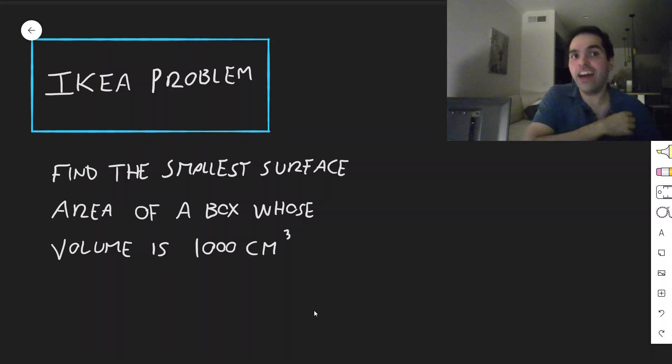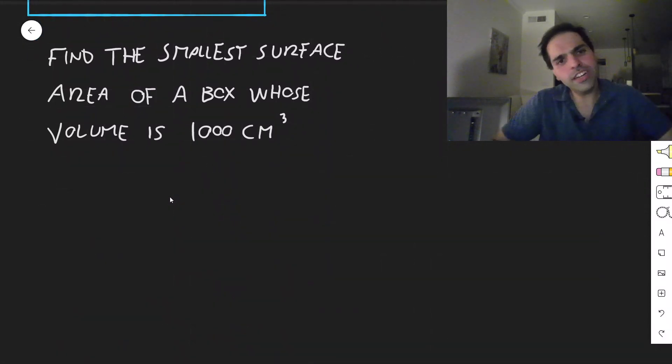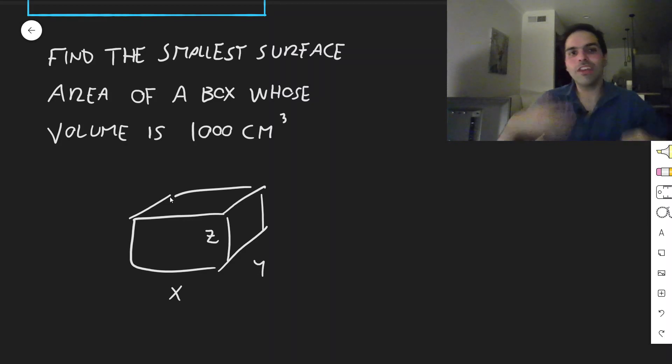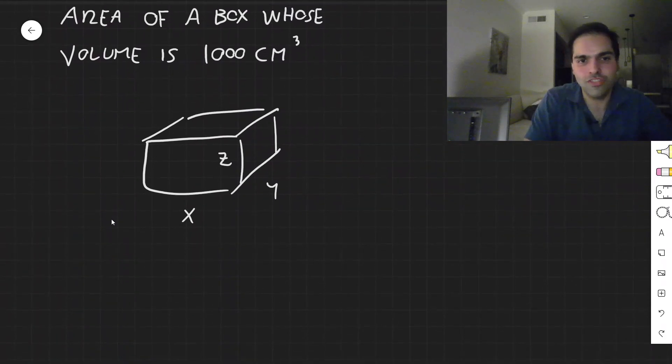And this is a calc 3 optimization problem, which you'll see soon is very similar to the regular calc max min problems. So here again, what do we have? So we have this box with dimensions x, y, z, and we would like to design it in such a way that it has the smallest surface area. And the first order of business is to find a multivariable function that represents that surface area.